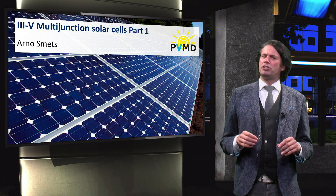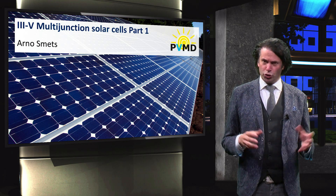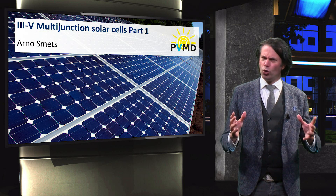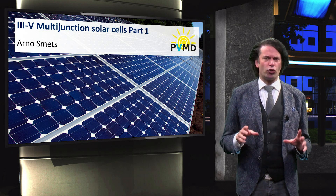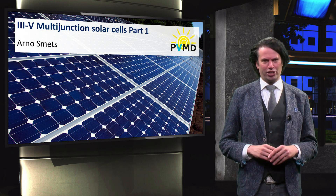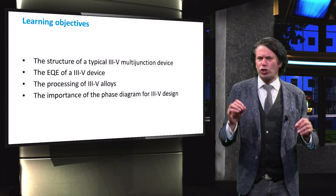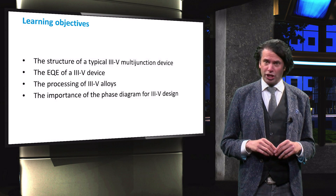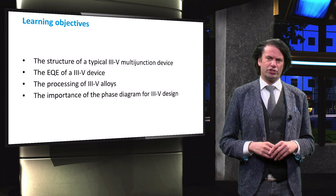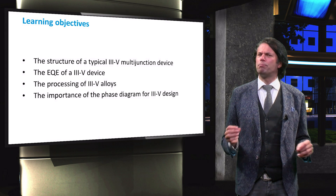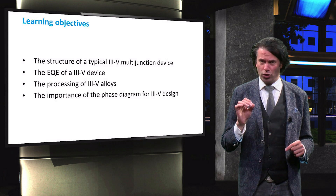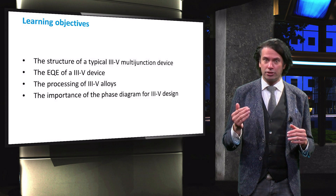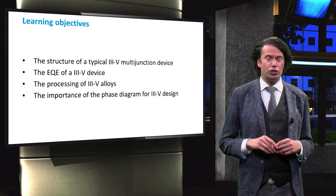In the preceding videos, we discussed the material properties of the semiconductors used for the III-V PV technology. Now we will look into the design and architecture of the III-V solar cells. To that end, we will discuss the structure of a typical III-V multi-junction solar cell and its external quantum efficiency. We will then look at the processing and phase diagram of III-V alloys, in order to discuss the challenges inherent to the III-V multi-junction design.